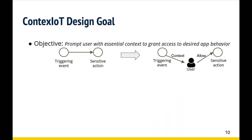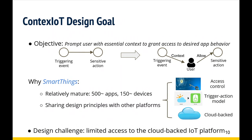We introduce our design goal of ContextSuite, which is prompting users with essential context to grant access to the user's desired app behavior. We choose Samsung SmartThings to demonstrate our solution because it is a relatively mature platform with over 500 apps and 150 supported devices. More importantly, it shares key design principles with other popular IoT platforms such as Apple HomeKit, Android Things, and AllJoyn. These platforms all have a certain level of access control, use a popular trigger-action-based programming model, and are cloud-backed. However, this also presents a design challenge: limited access to the cloud-backed IoT platform.